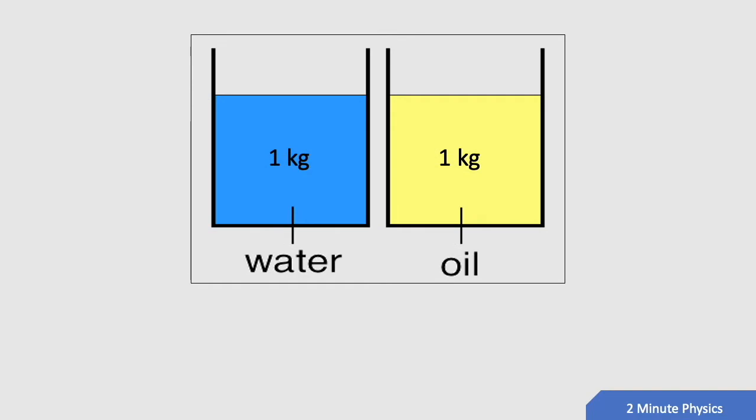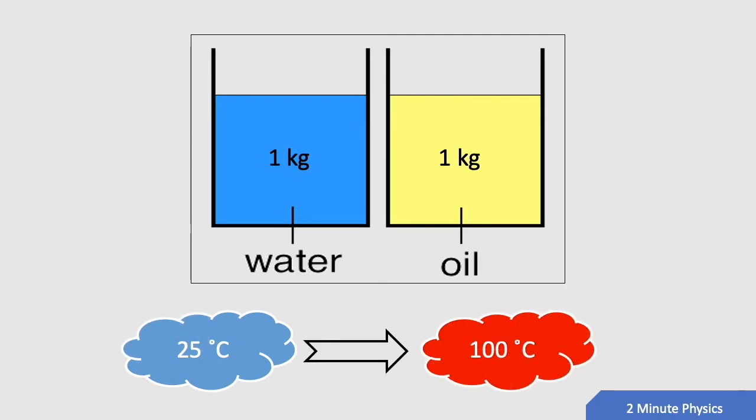Take a look at one example in our kitchen. We want to take both oil and water from a 25 degree Celsius room temperature to 100 degree Celsius.